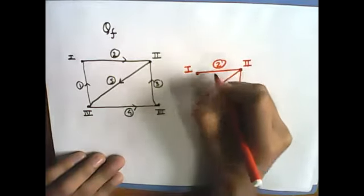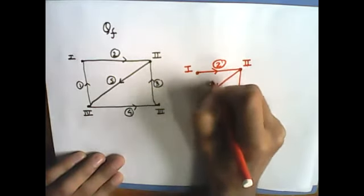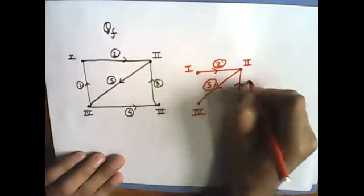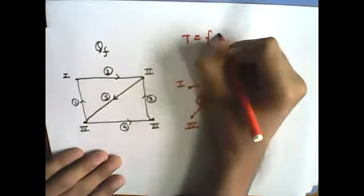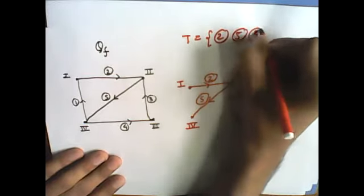I have chosen tree to be as 2, 5, and 3. This is my tree. So, T is equals to 2, 5, and 3.